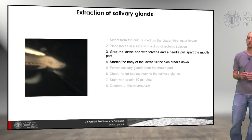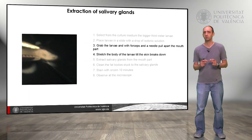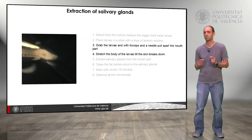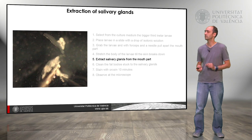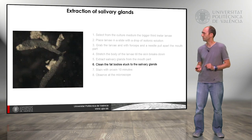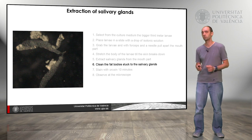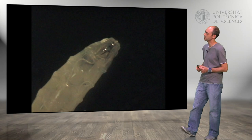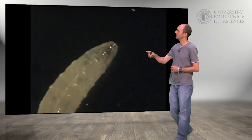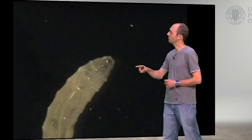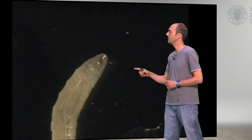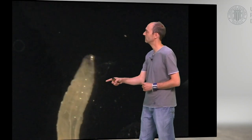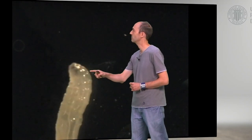The next step: once we have selected the larva, we have to grab the larva with forceps, take out the upper part, then extract the salivary glands, and clean them from the fat bodies. Here we have the larva — we can see the head, the jaws — and the salivary glands are around this part of the larva.